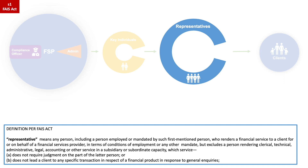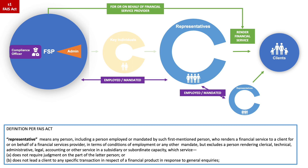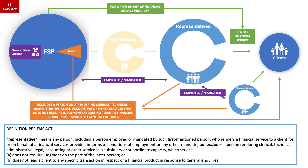Let's break this down. A representative is any person who is appointed, employed or mandated by the FSP, but also includes a person who is employed or mandated by the person that is employed or mandated by the FSP. A representative renders a financial service on behalf of the FSP based on terms of employment contract and/or mandate. A person is not a representative if they provide only clerical, technical, administrative, legal, accounting or other services that do not require judgment or do not lead to financial products in response to a general inquiry. It is important to note that a representative can perform certain administration tasks and still be a representative.